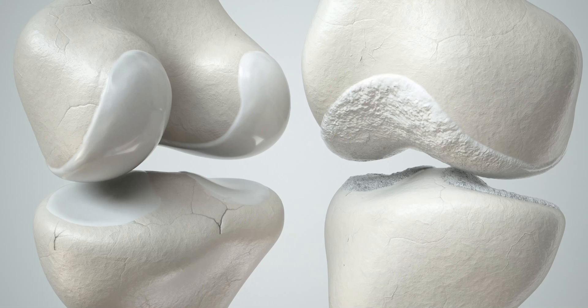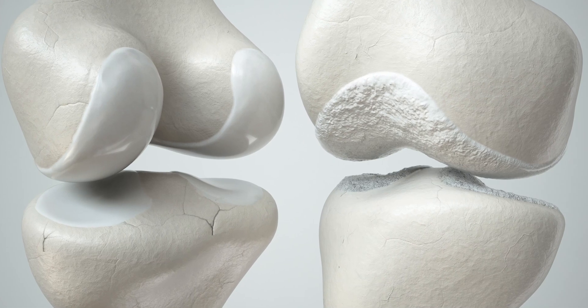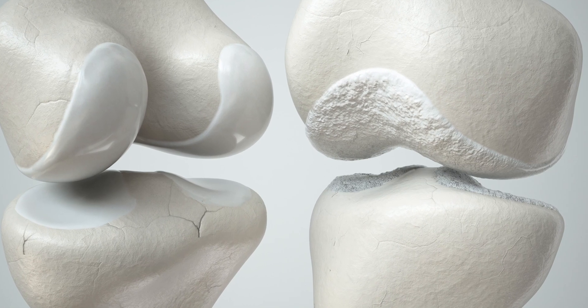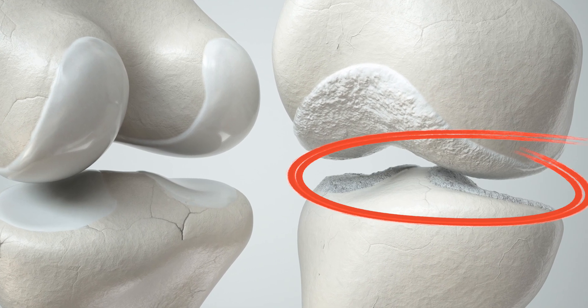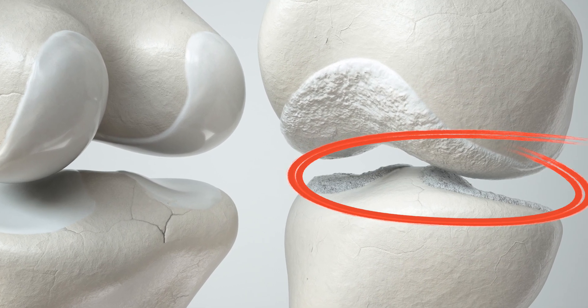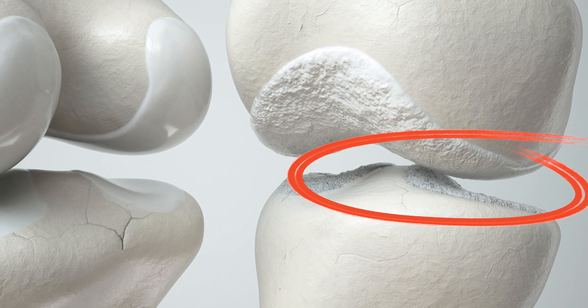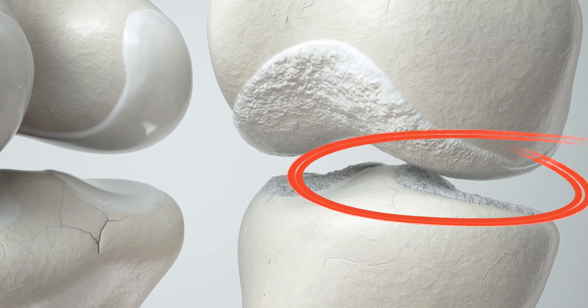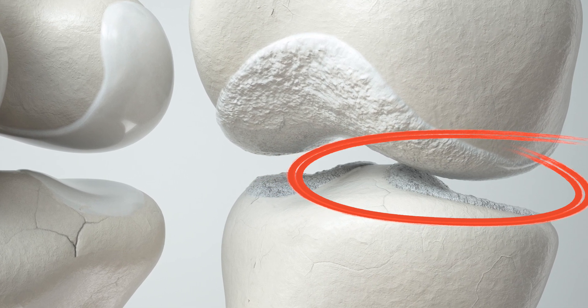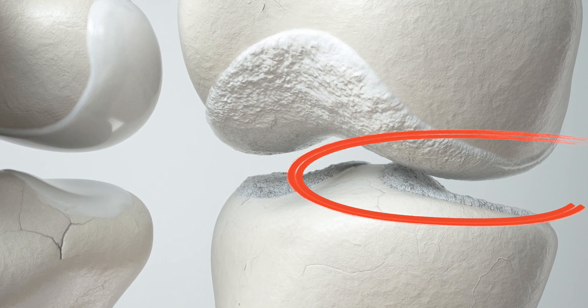Fourth, the bones and joints. Supplementing with urolithin A appears to improve the damage caused by osteoarthritis. The cartilage in between the joints appears to degenerate slower with urolithin A intake.